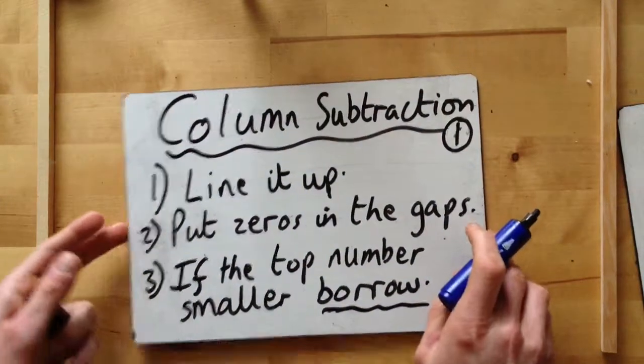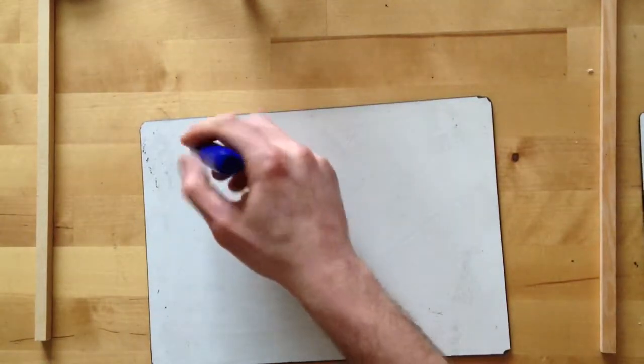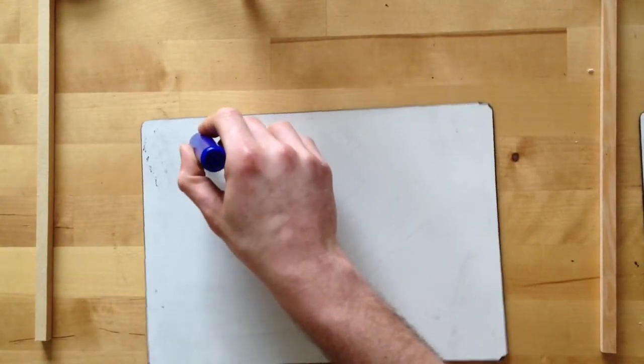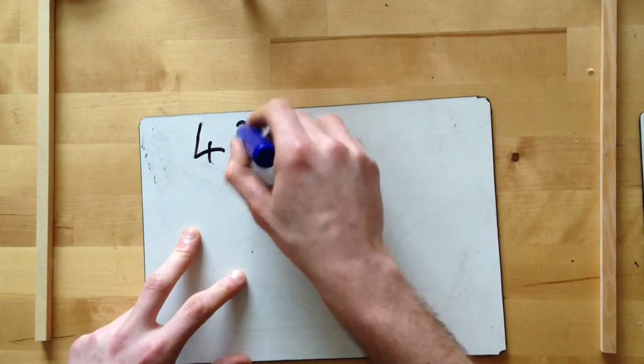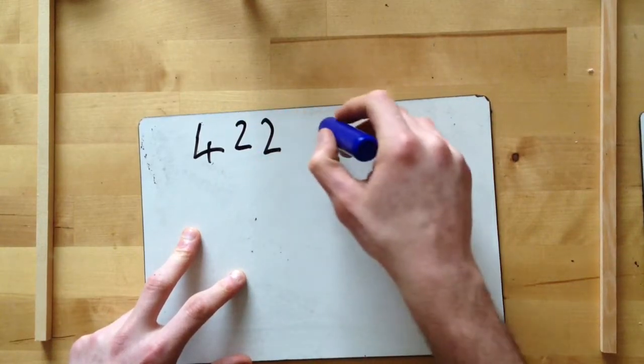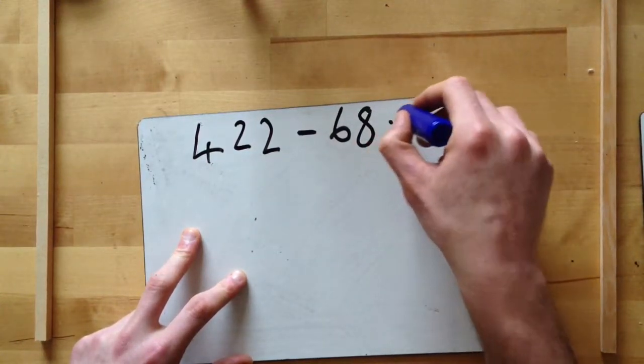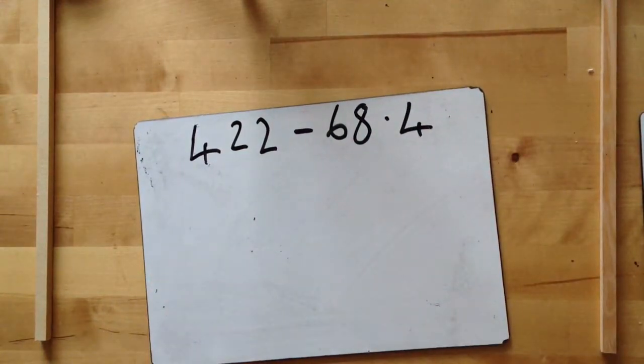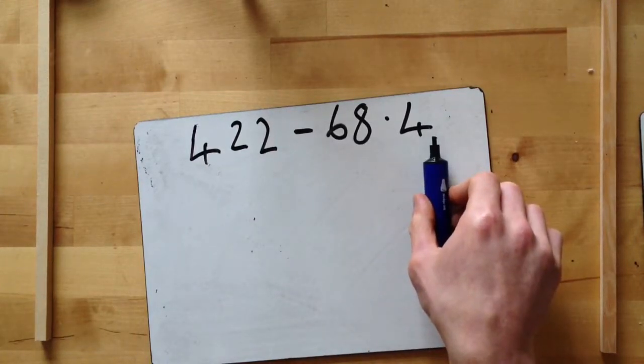Okay, so let's do an example, number one. Say we've got 422 take away 68.4. Again, like with addition, we need to get these numbers in the right columns, lined up properly.